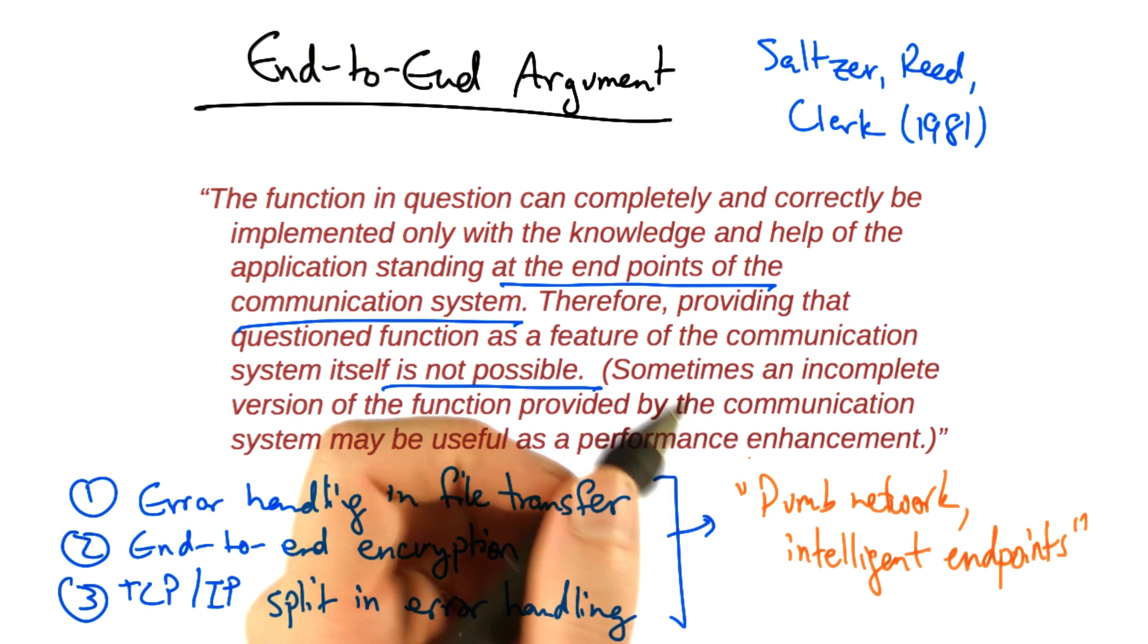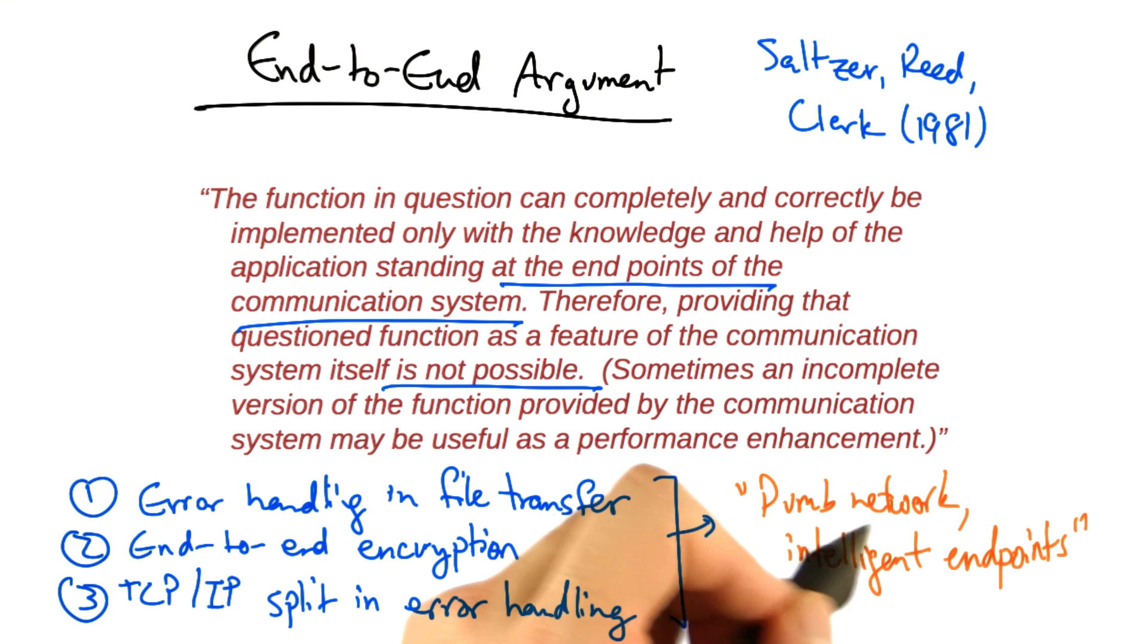Sometimes the end-to-end argument is summarized as the network should be dumb and minimal, and the endpoints should be intelligent.